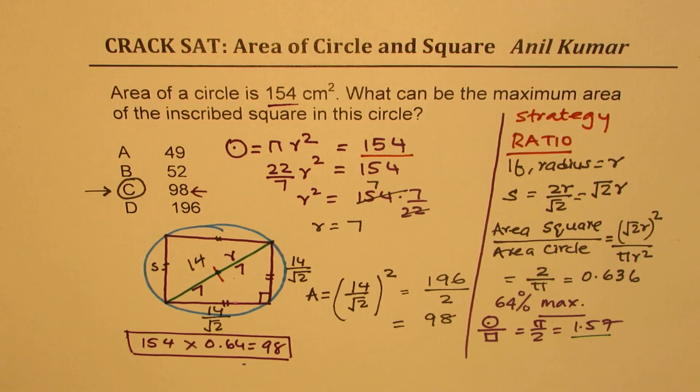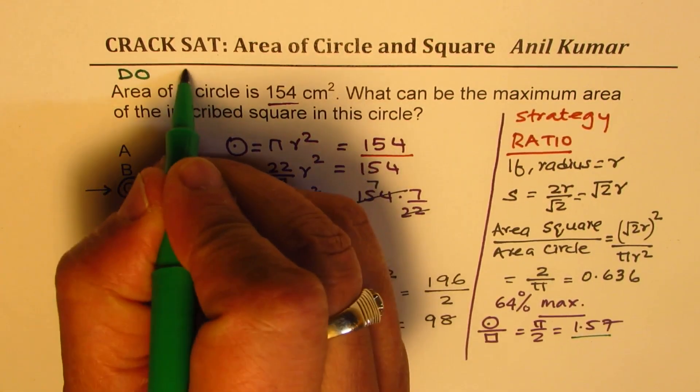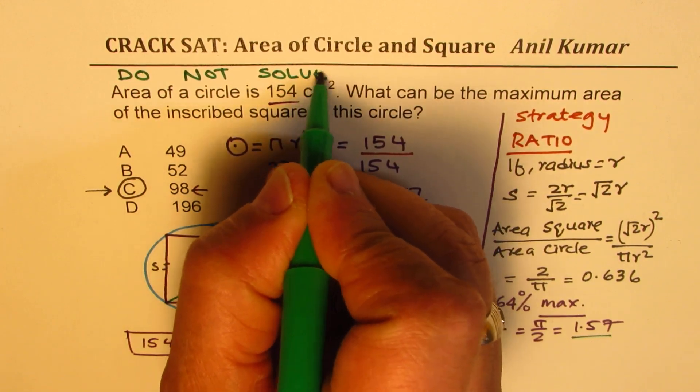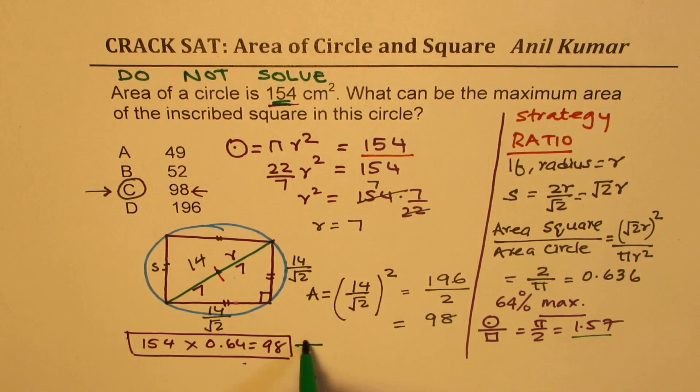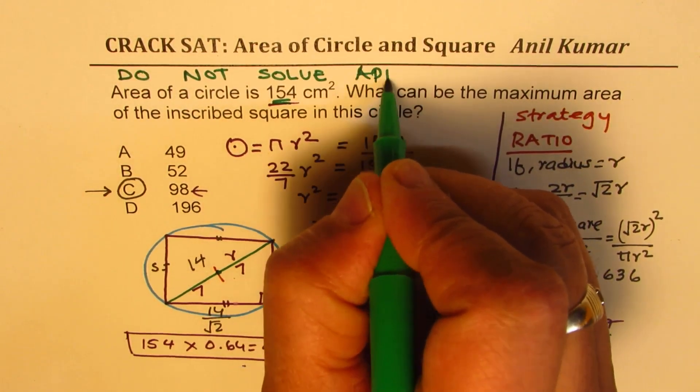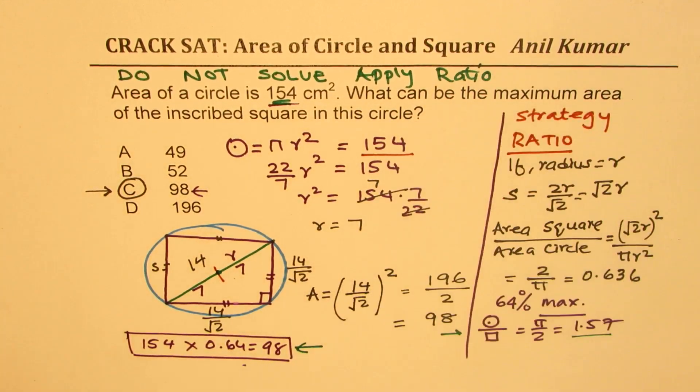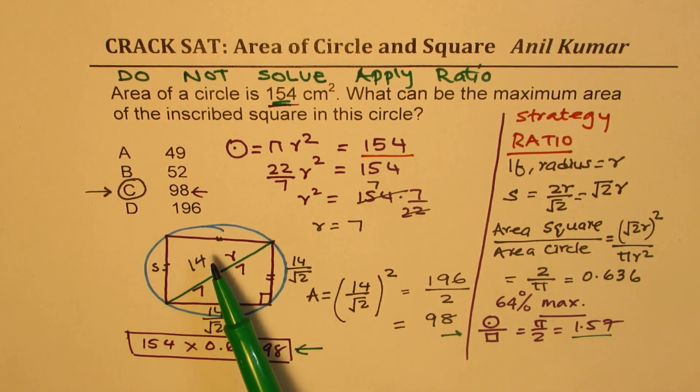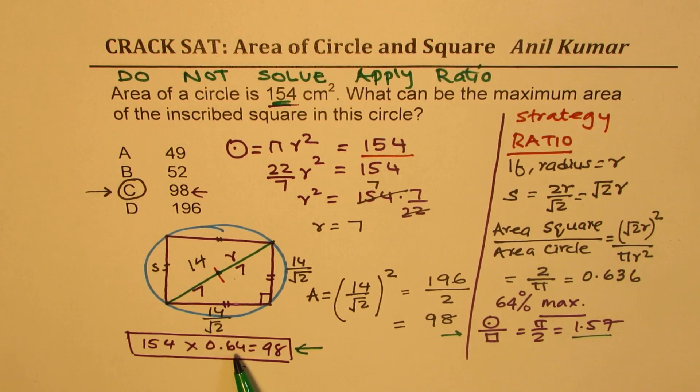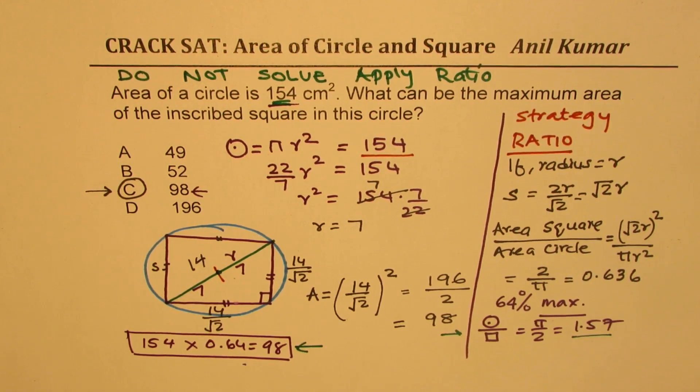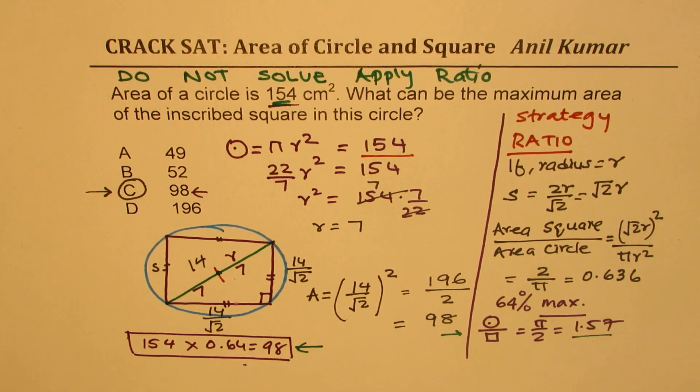So that is how you could easily remember and solve such multiple choice questions or answer, I should say. Do not solve, I will say. So the strategy here is do not solve with value. Use this ratio, apply ratio. If it is inscribed square, this area has to be smaller and it is 64%. If the circle is circumscribed over the square, then it is 1.57 times that of the square. These are good numbers to remember. I hope that helps. Feel free to write your comments and share your views. Thanks for watching and all the best.